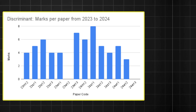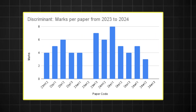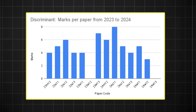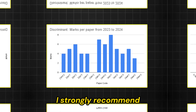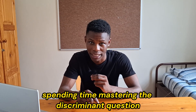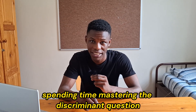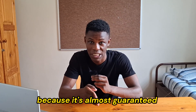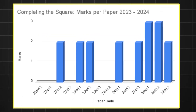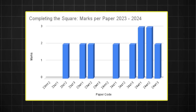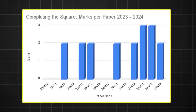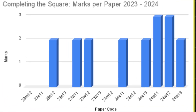That's the discriminant question. It has appeared in 12 of the last 14 papers, making it one of the most frequent questions in Pure One. I strongly recommend spending time mastering the discriminant question before the May-June exam because it's almost guaranteed to show up. Apart from the discriminant, completing the square has been gaining popularity — it appeared in all of the October-November 2024 papers, so it's definitely one to practice.